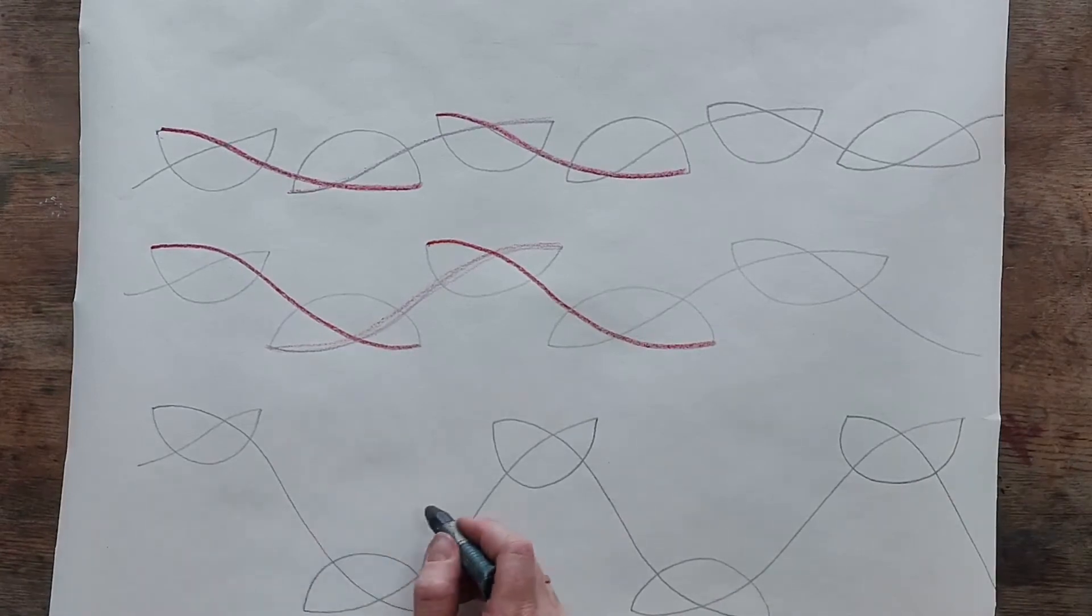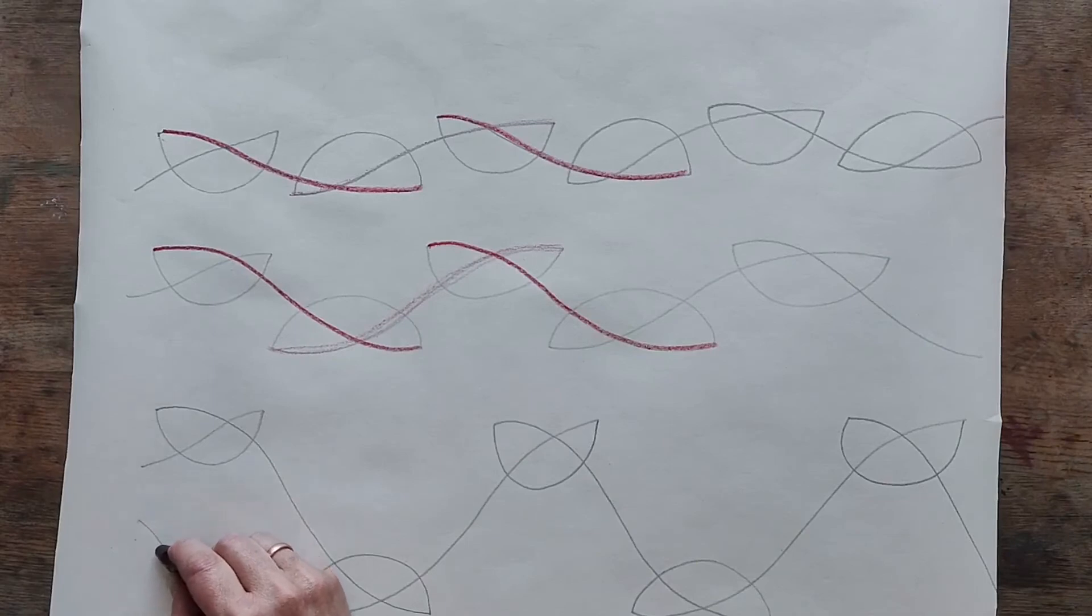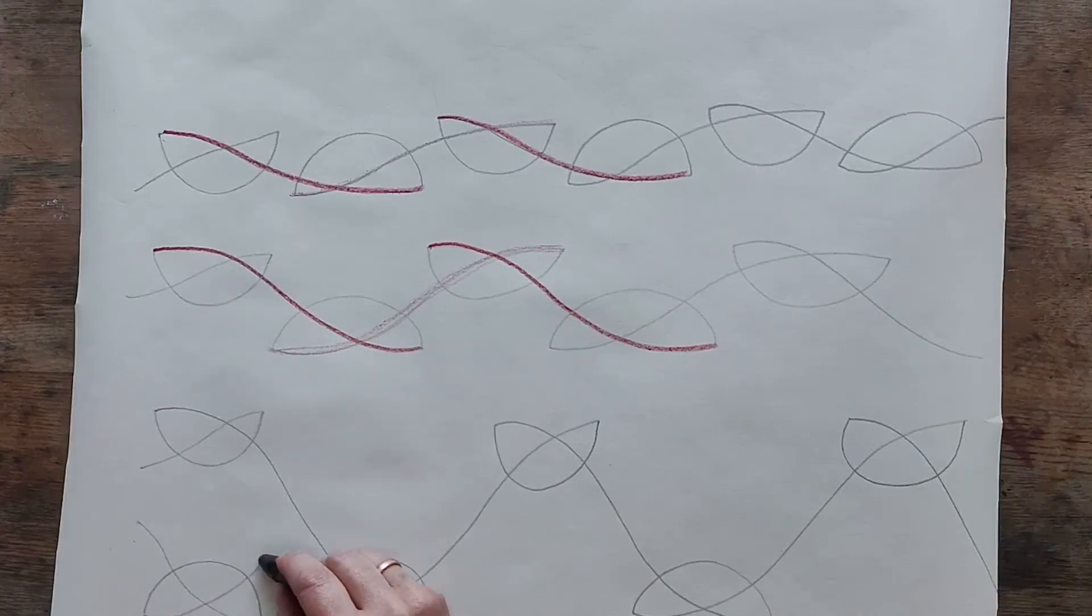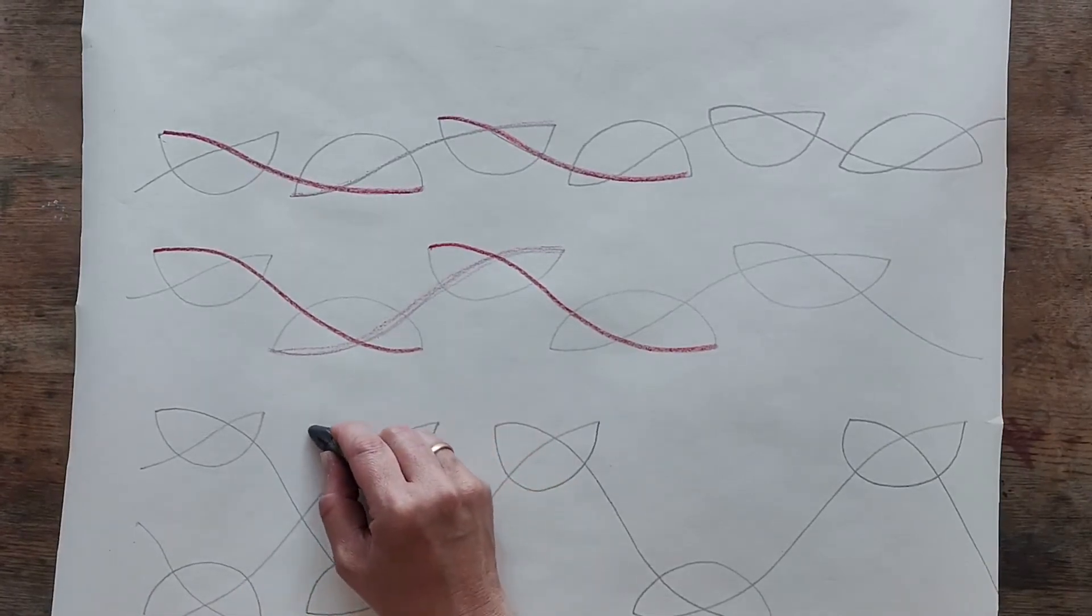Because what we want to do is we want to intersect this band. So here we're coming from here and we're going down the way, and then we're creating our knot down here. Then we're rising and then we're creating our knot.